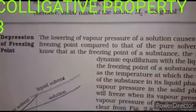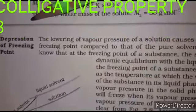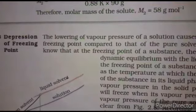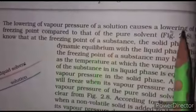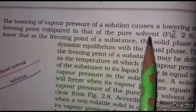Good morning students. Today we will discuss the next colligative property: depression of freezing point. Open your books on page number 50. In the previous video we discussed two colligative properties — relative lowering of vapor pressure and elevation of boiling point. The lowering of vapor pressure of a solution causes a lowering of freezing point compared to that of the pure solvent.